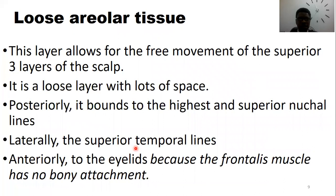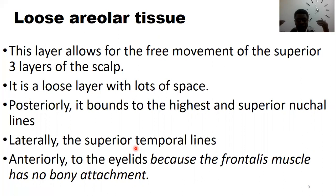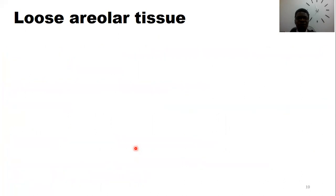Anteriorly, the loose areolar tissue inserts into the eyelids — not into the frontalis as the aponeurotica does. Since the aponeurotica has no bony attachment anteriorly, the loose areolar tissue has been following it from posterior to lateral to anterior, and then it inserts into the eyelids.